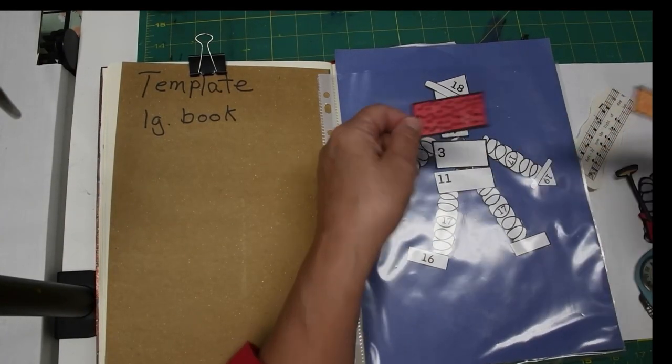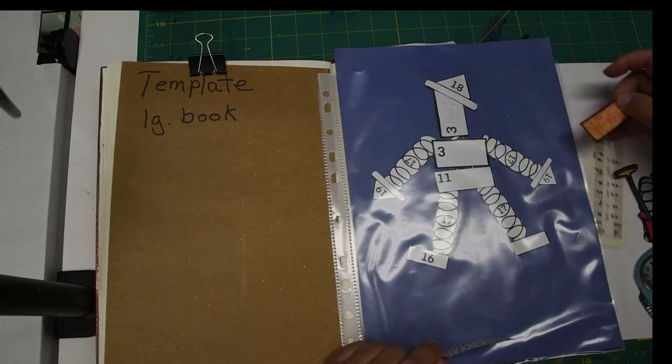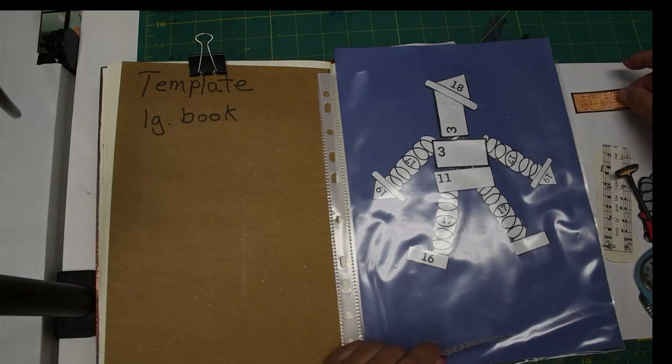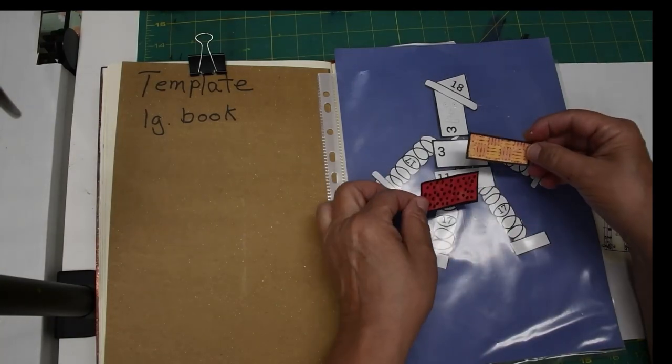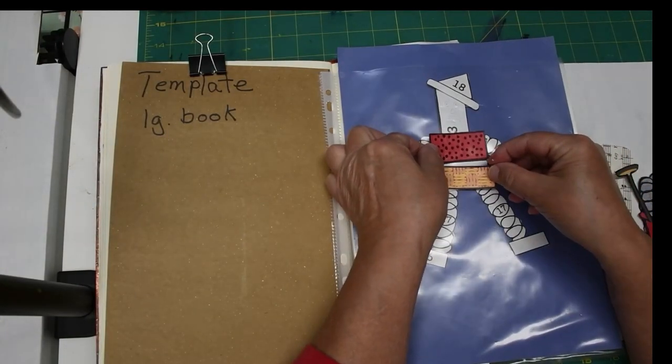Just take your pattern piece, lay it on a piece of colored paper that you want to use, draw around it and cut it out, as simple as that. And this is his body.